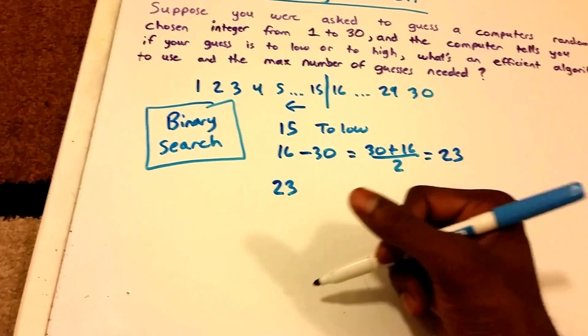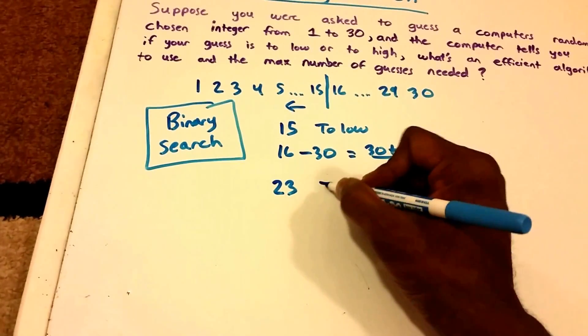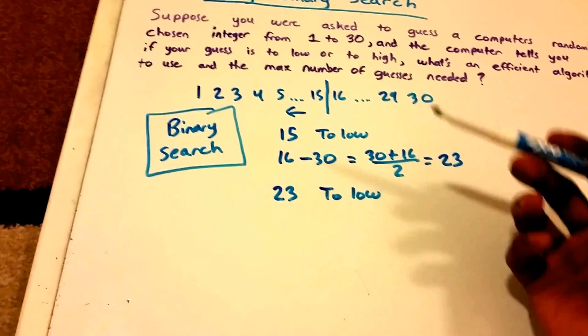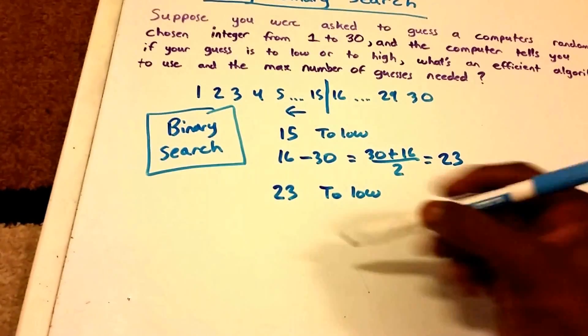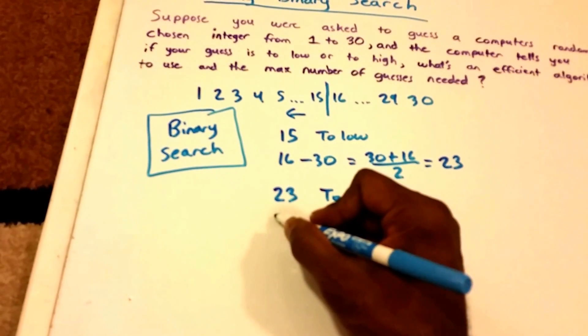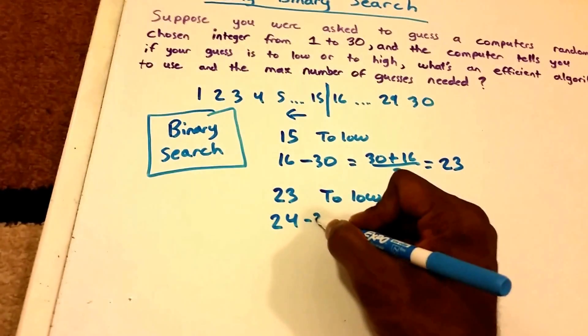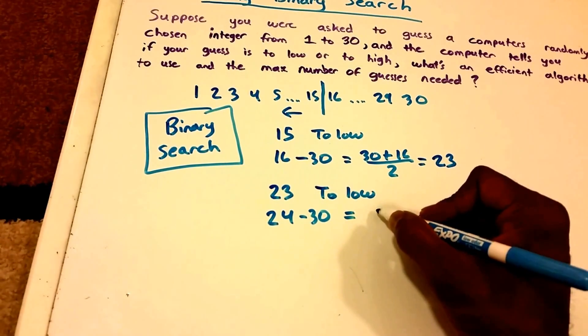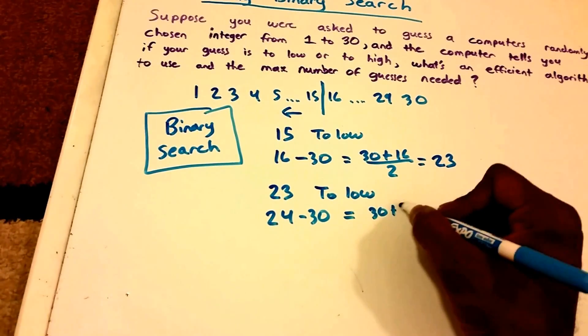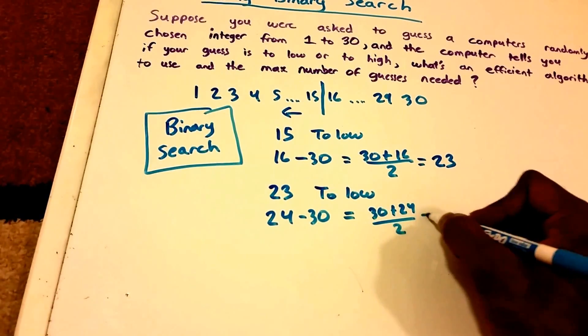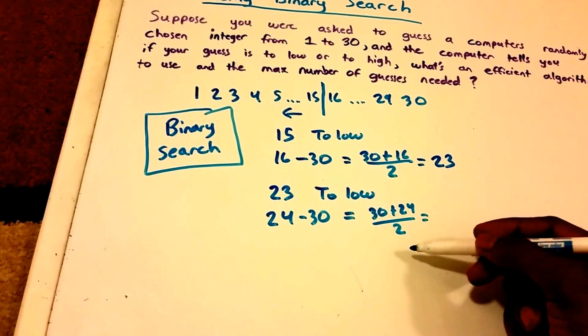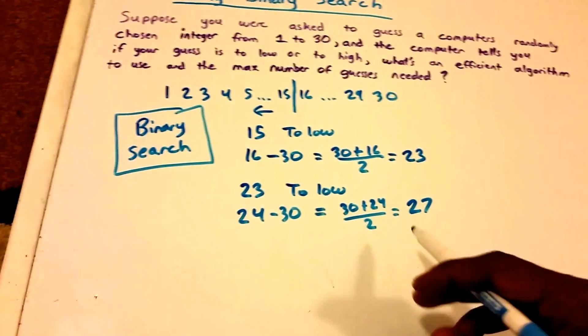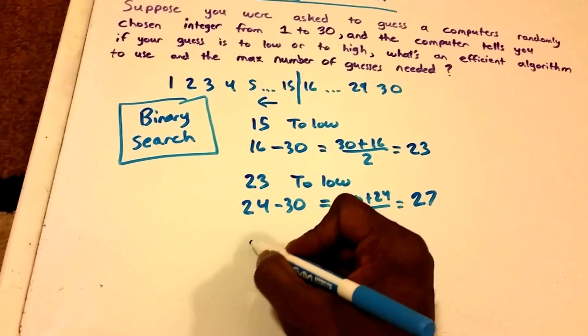So the next guess that we're going to choose is 23. And we're going to ask the computer, hey, is 23 your number? And the computer again is going to say, no, that's too low. So my number is higher, so guess a higher number. So now the number of possible choices is 24 to 30. So what we do is use that same algorithm. So we just do 30 plus 24 divided by 2. And this gives us 54 divided by 2, which is just 27.